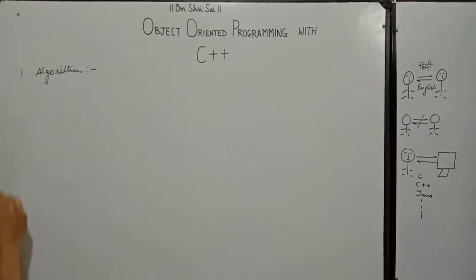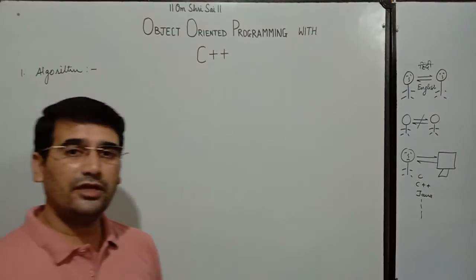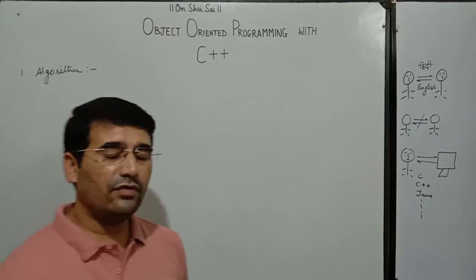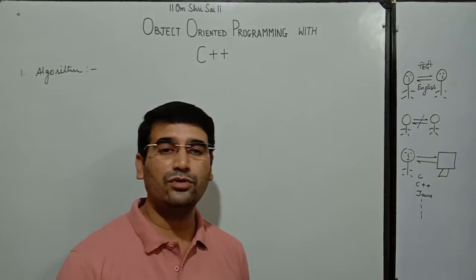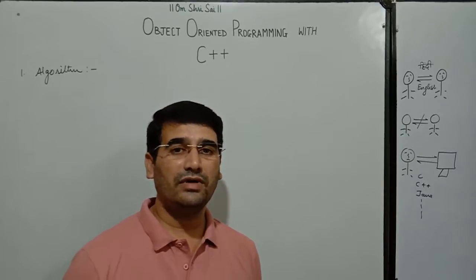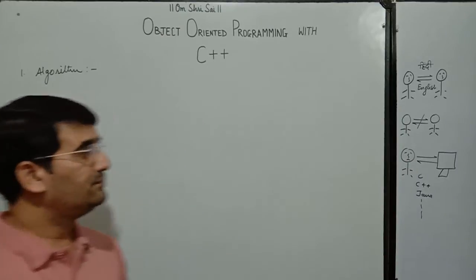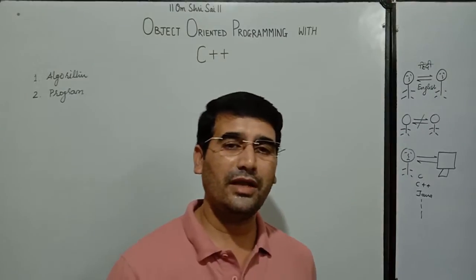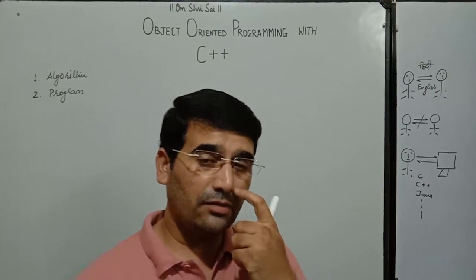An algorithm is a sequential set of instructions to accomplish any given task. In real life, if you want to perform any task, we have to go through some steps. And these steps must be followed in a specific sequence, then only our task will be completed. Now, what is a program? Once an algorithm is defined, algorithm cannot be run on computer.